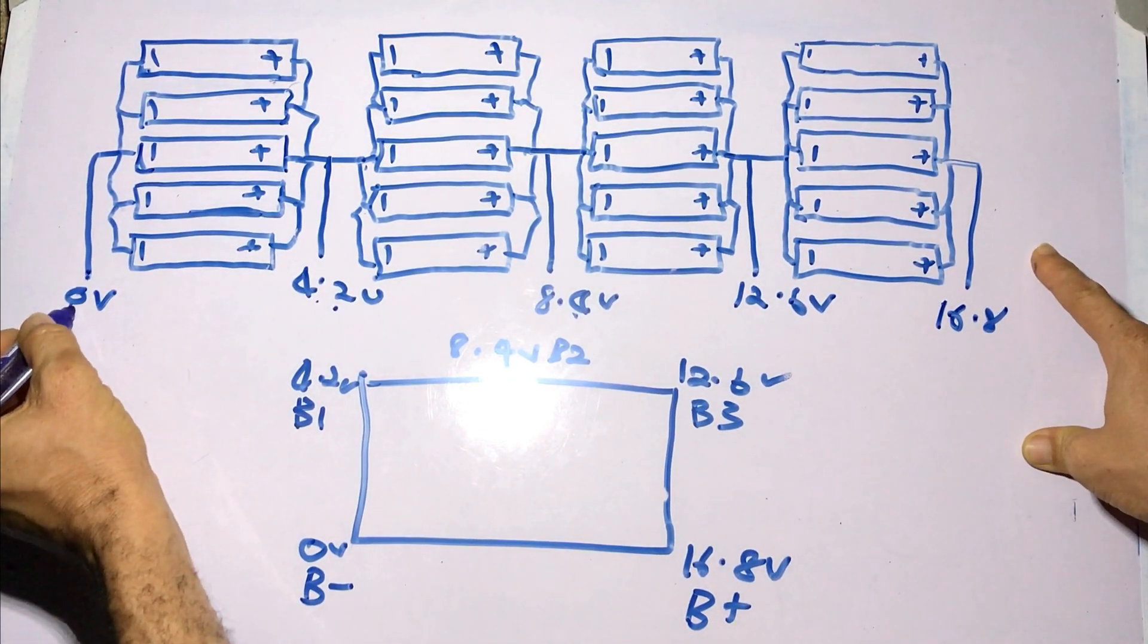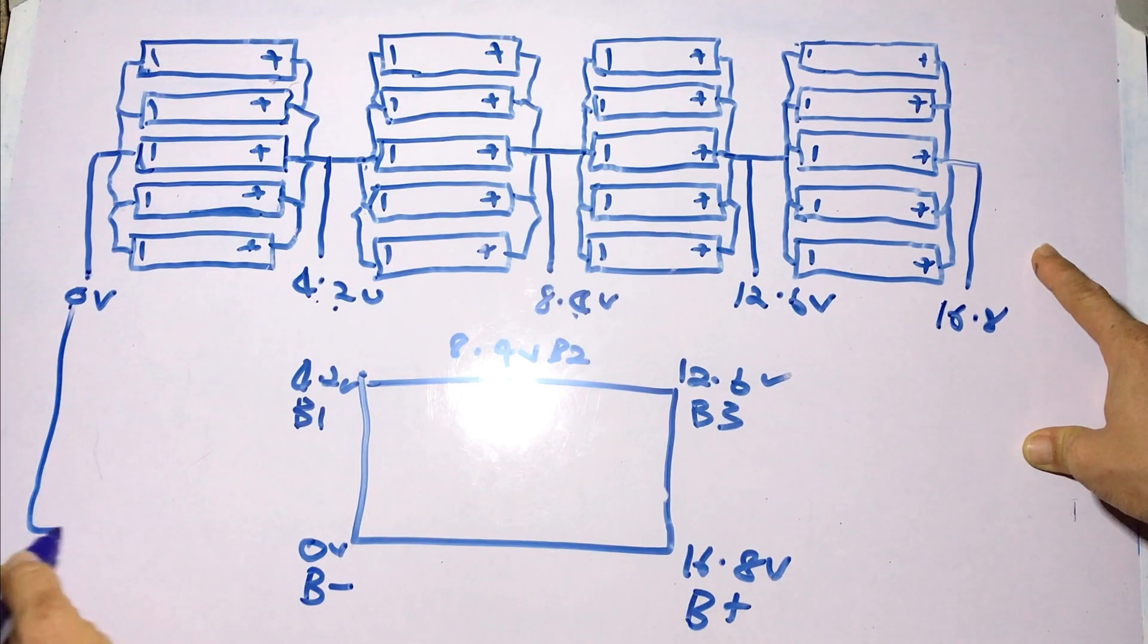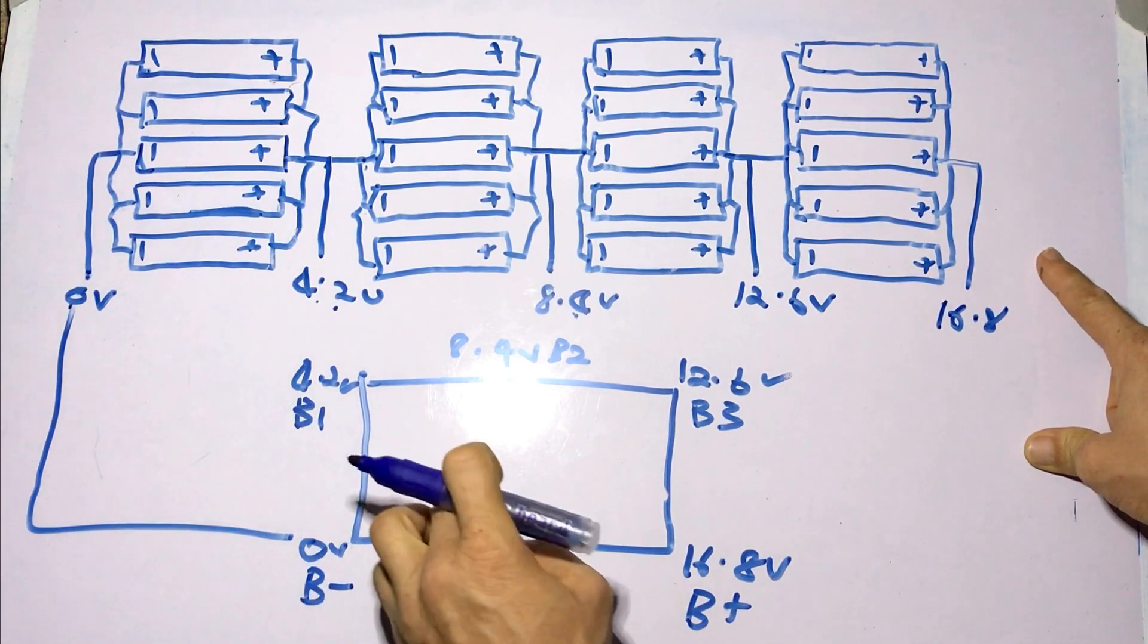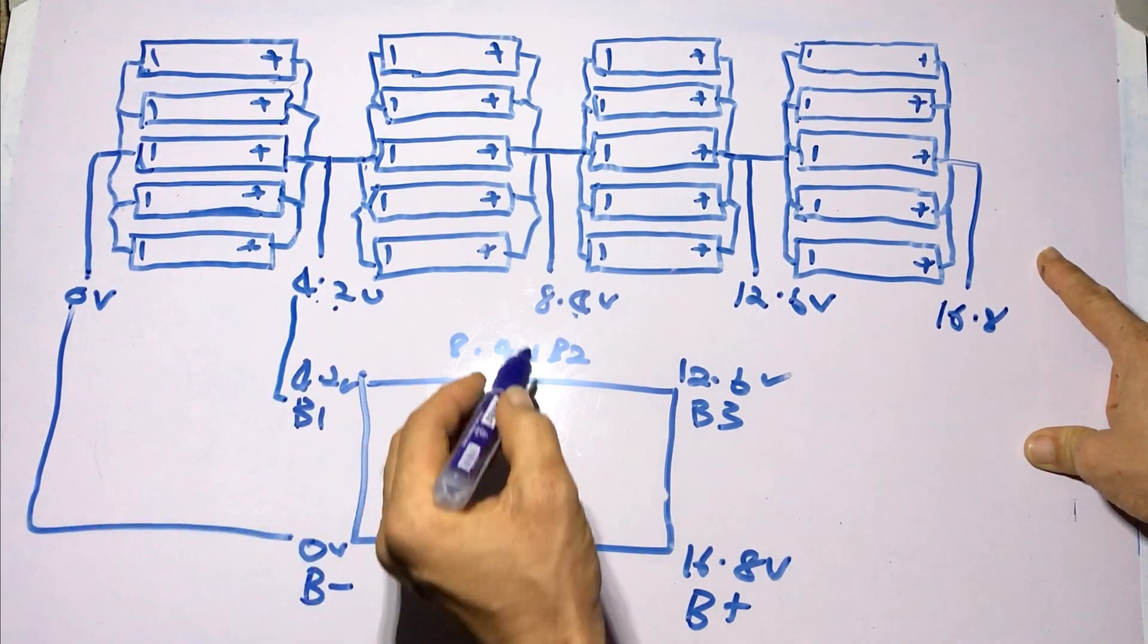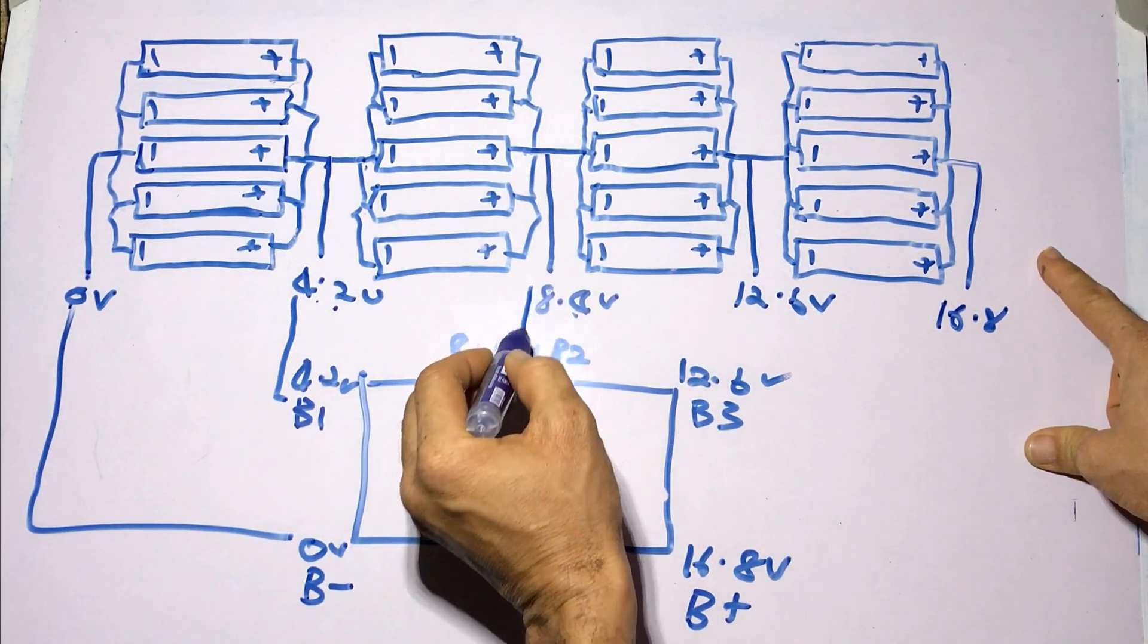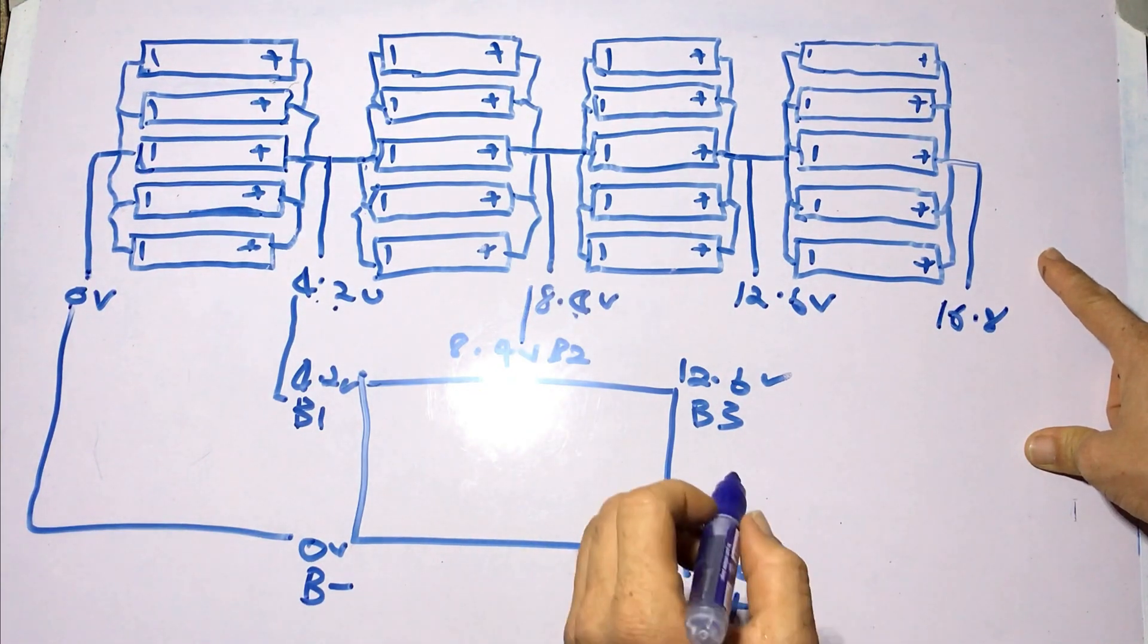So you wire battery negative connection to the zero volts or B minus on the BMS, then 4.2 volts comes to B1 or 4.2 volts, and 8.4 volts to 8.4 volts respectively.